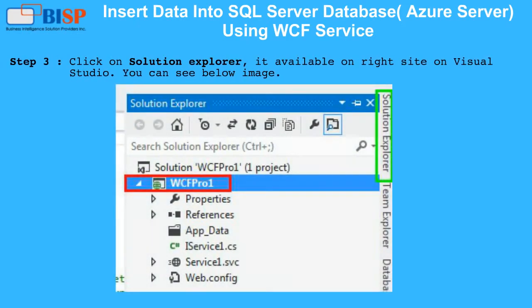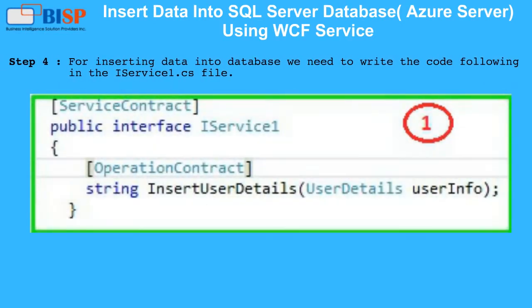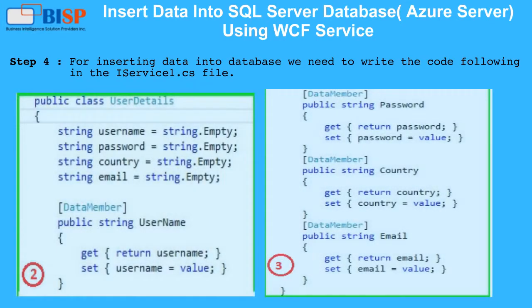Step 3: Click on Solution Explorer — it is available on the right side of Visual Studio, as shown in the image below. Step 4: For inserting data into the database, we need to write the following code in the iservice1.cs file.